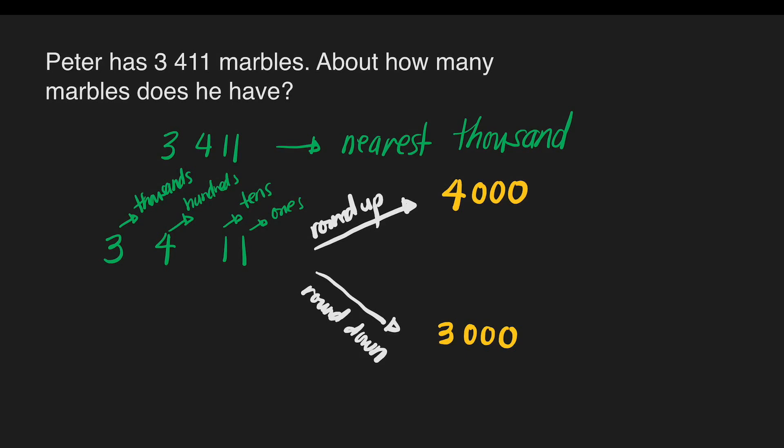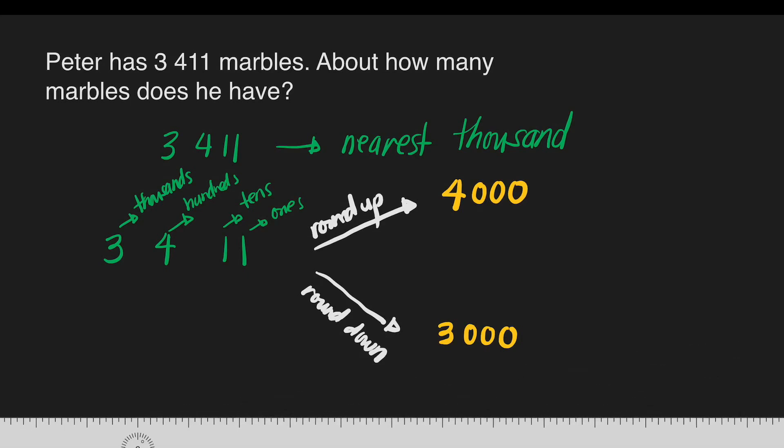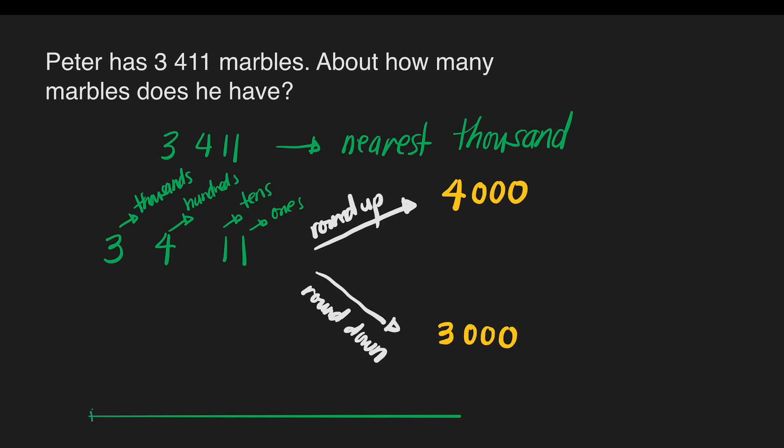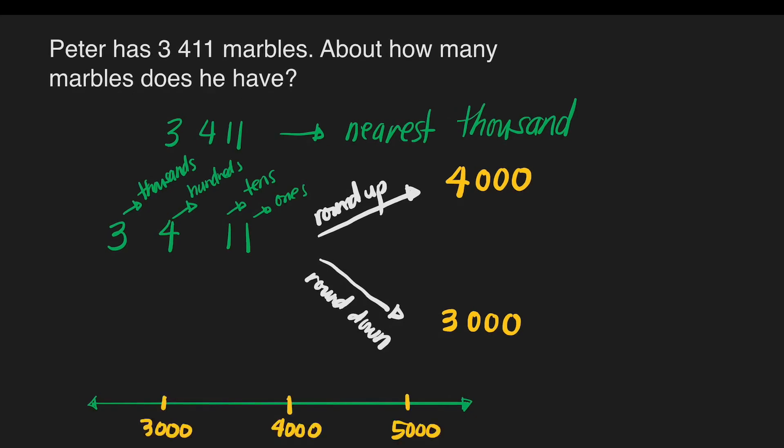Let us first visualize 3,411 in a number line. We will draw the number line here and locate where is our 3,411. Somewhere right here in the center is 3,500, so it means our 3,411 is somewhere right here.